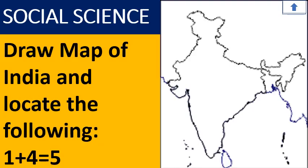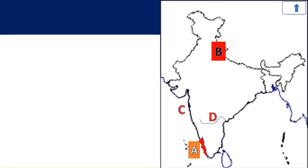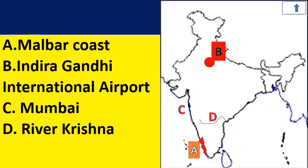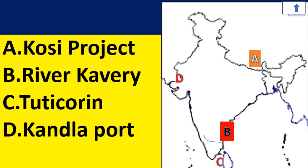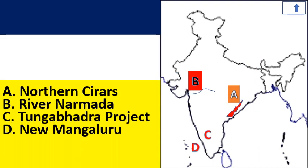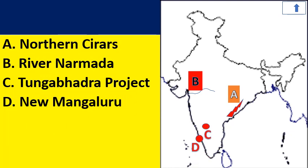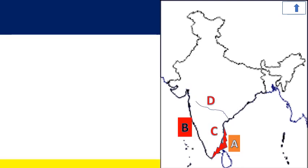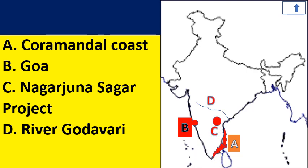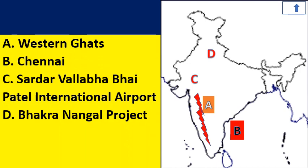For map-based questions, learn to locate: Malabar Coast, Indira Gandhi International Airport (Mumbai), River Krishna, Kosi Project, River Kaveri, Tuticorin, Kandla Port, Northern Sarkars, River Narmada, Tungabhadra Project, New Mangaluru, Coromandel Coast, Goa, Nagarjunasagar Project, River Godavari, Western Ghats, Chennai, Sardar Vallabhbhai Patel International Airport, and Bhakra Nangal Project.